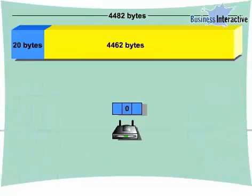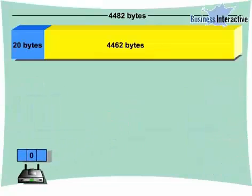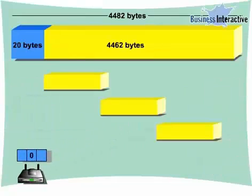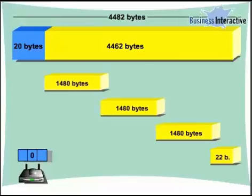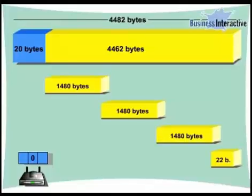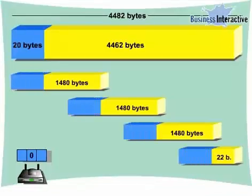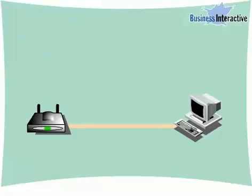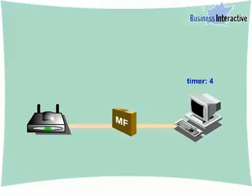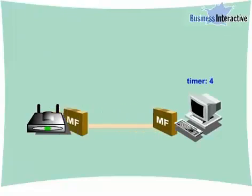If it can be fragmented, then it breaks the datagram into 3 fragments of 1480 bytes each and 1 smaller fragment, then adds a header of 20 bytes. The receiver reassembles the packet and checks for missing packets by means of the MF flag and a timer.